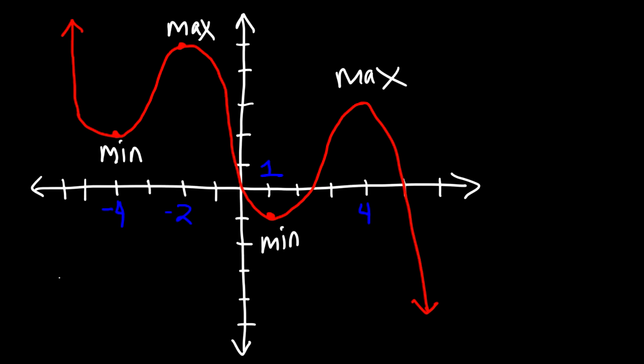Now the first actual relative minimum value has a y value of 2, and the second minimum value, the y value, is negative 1.